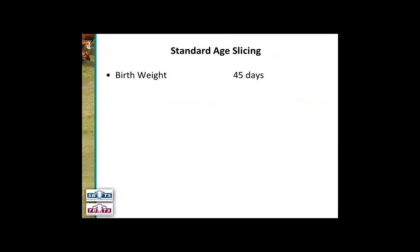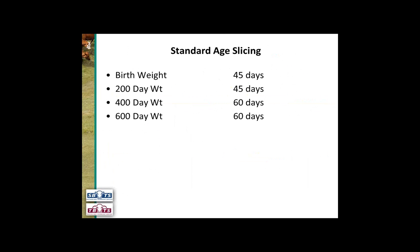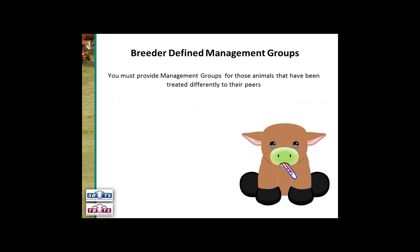To summarise the age slicing periods: birth weight is 45 days; 200-day weight is 45 days; 400-day weight is 60 days; 600-day weight is 60 days; scrotal size is 60 days; and scan traits are 60 days. Seasonal conditions can change quite a lot over a calving period, which is why these limits are imposed.